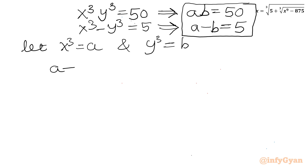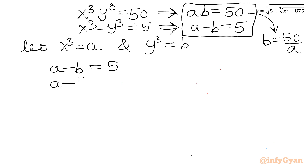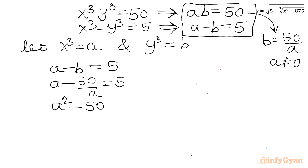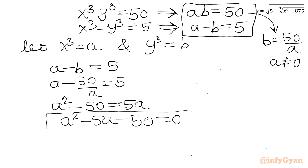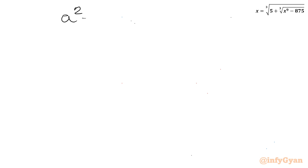From a minus b equals 5 and ab equals 50, I can write b equals 50 over a. Substituting into a minus 50 over a equals 5, and since a cannot be 0, multiplying both sides by a gives a squared minus 50 equals 5a, or a squared minus 5a minus 50 equals 0.